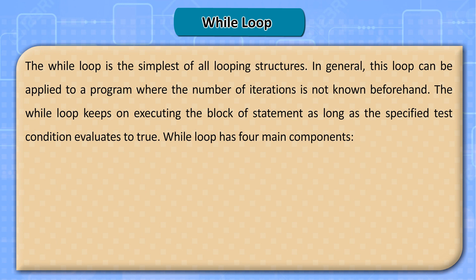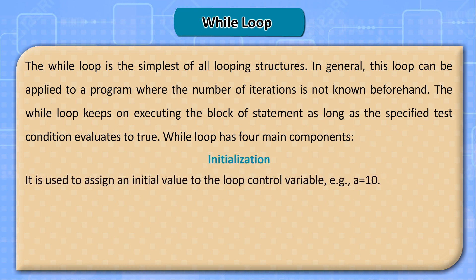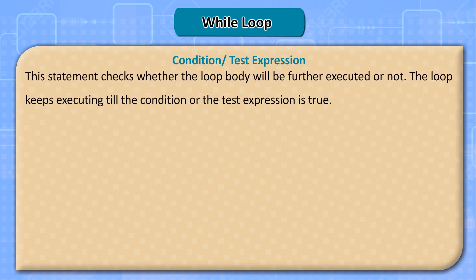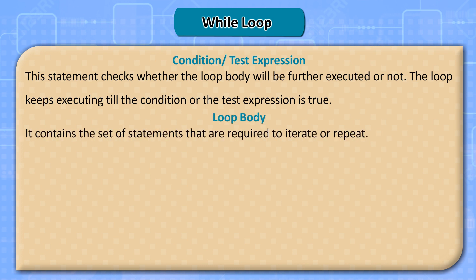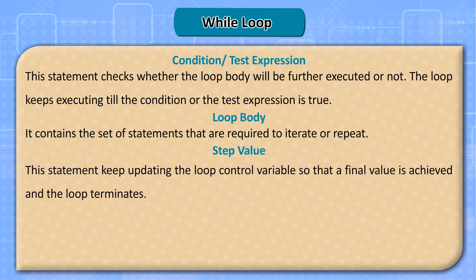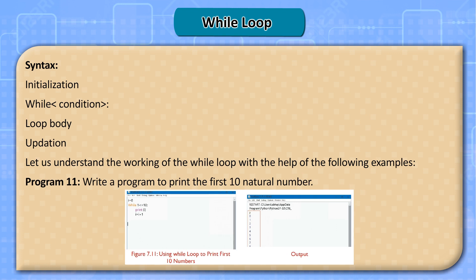While loop: the while loop is the simplest of all looping structures. In general, this loop can be applied to a program where the number of iterations is not known beforehand. The while loop keeps executing the block of statements as long as the specified test condition evaluates to true. The while loop has four main components: Initialization — used to assign an initial value to the loop control variable, e.g., a equals 10; Condition/test expression — checks whether the loop body will be further executed; Loop body — contains the set of statements required to iterate; Step value — keeps updating the loop control variable so a final value is achieved and the loop terminates.